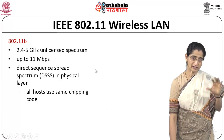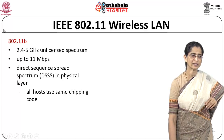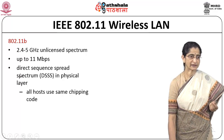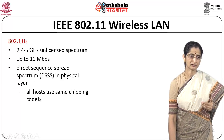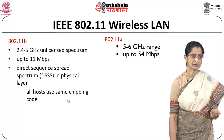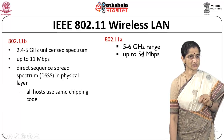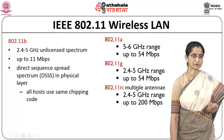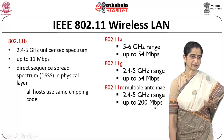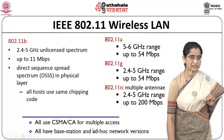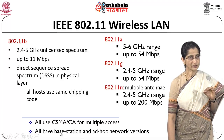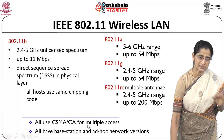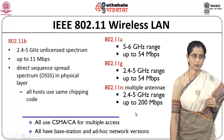Looking at the 802.11 standard, there are multiple versions. 802.11b operates in the 2.4–5 GHz unlicensed spectrum with data rates up to 11 Mbps, using direct sequence spread spectrum at the physical layer. 802.11a works in the 5–6 GHz range with up to 54 Mbps. 802.11g covers 2.4–5 GHz with up to 54 Mbps. 802.11n uses multiple antennas for up to 200 Mbps. All use CSMA/CA for multiple access and support both infrastructure and ad hoc modes of operation.